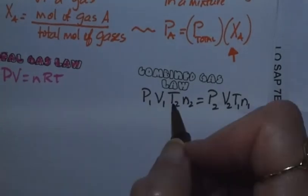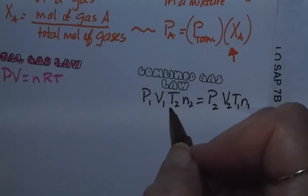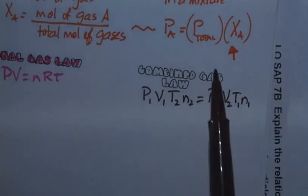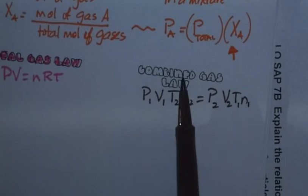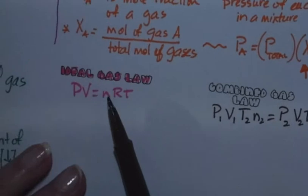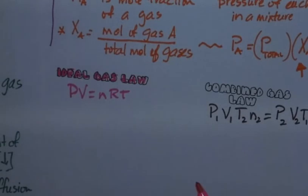The combined gas law is used when you have the same gas but you change something about it — no chemical reaction, just messing with the volume, pressure, temperature, or number of moles. The ideal gas law can be used when you have a chemical reaction — for example, how many moles of gas do you have now given certain pressures, volumes, and temperatures.